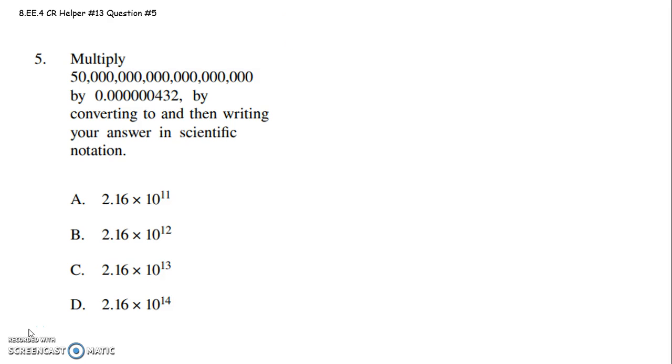It says multiply 50,000,000,000,000,000,000 by 0.000000432 by converting to scientific notation and then writing your answer in scientific notation. They're asking us to convert to scientific notation, then multiply, then give our answer in scientific notation.